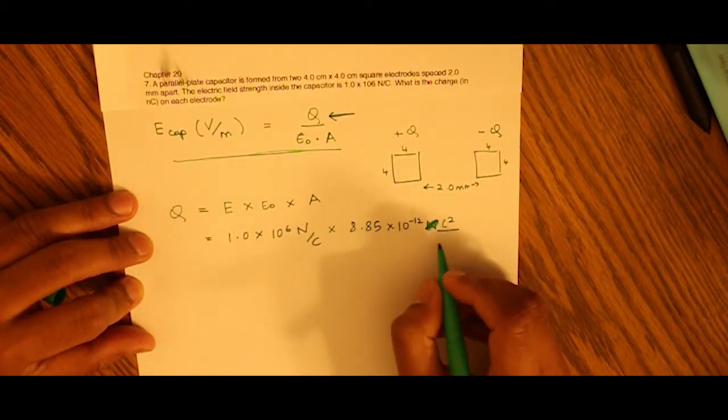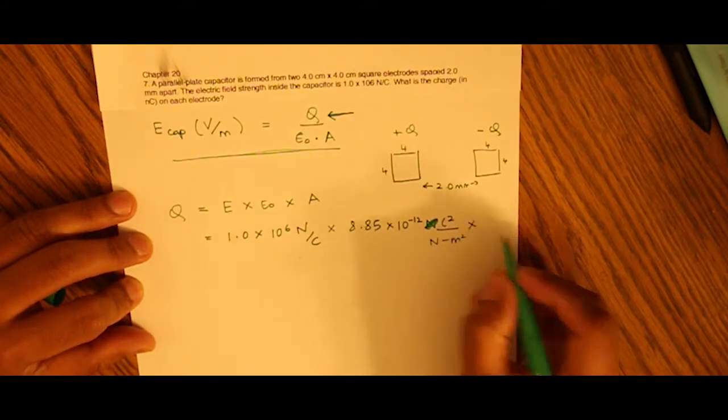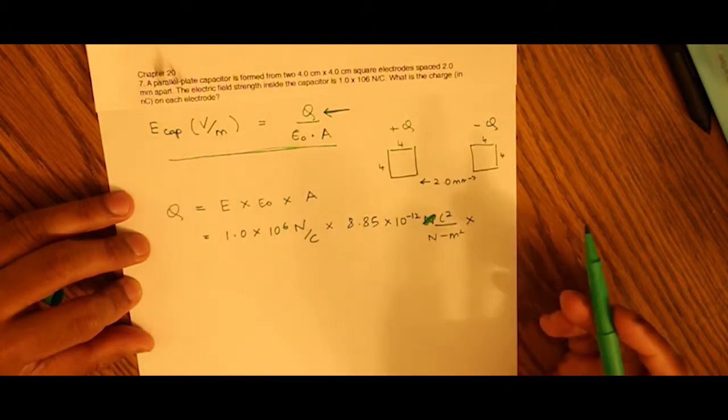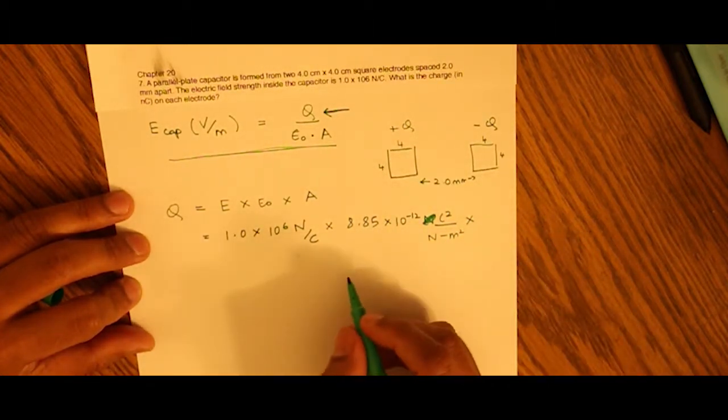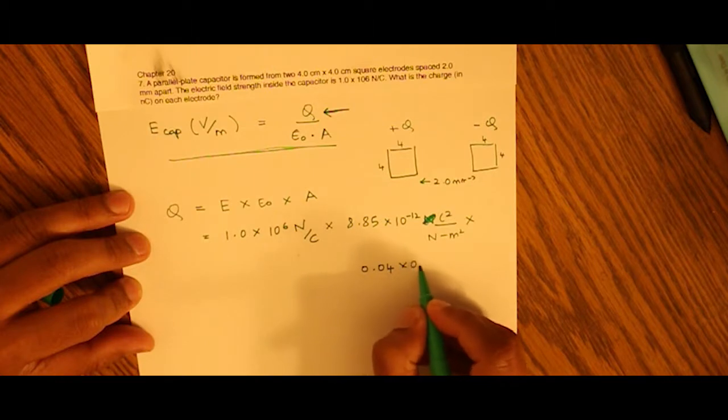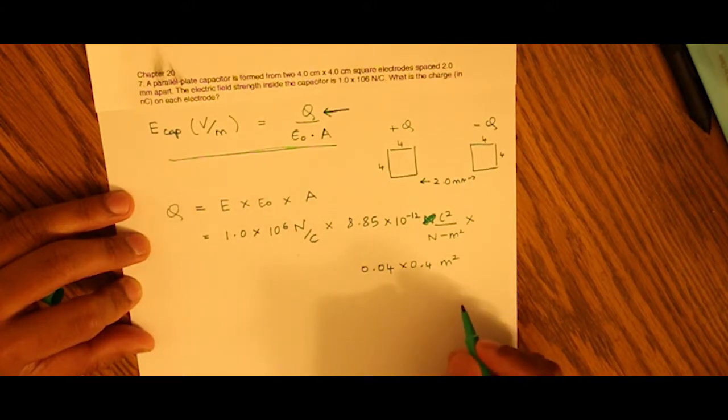And we know the area as 4 cm × 4 cm, so that is 0.04 m × 0.04 m squared, which equals 0.0016 m².